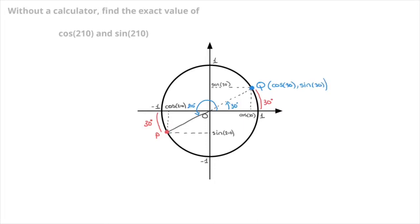Now we compare the coordinates of these two points, P and Q. Since these two points are diametrically opposite each other on the circle, their coordinates will also be the opposites of each other. That allows us to state that cosine of 210 will be the opposite of cosine of 30, and sine of 210 will be the opposite of sine of 30. So we can write cosine of 210 equals negative cosine of 30, and sine of 210 equals negative sine of 30.